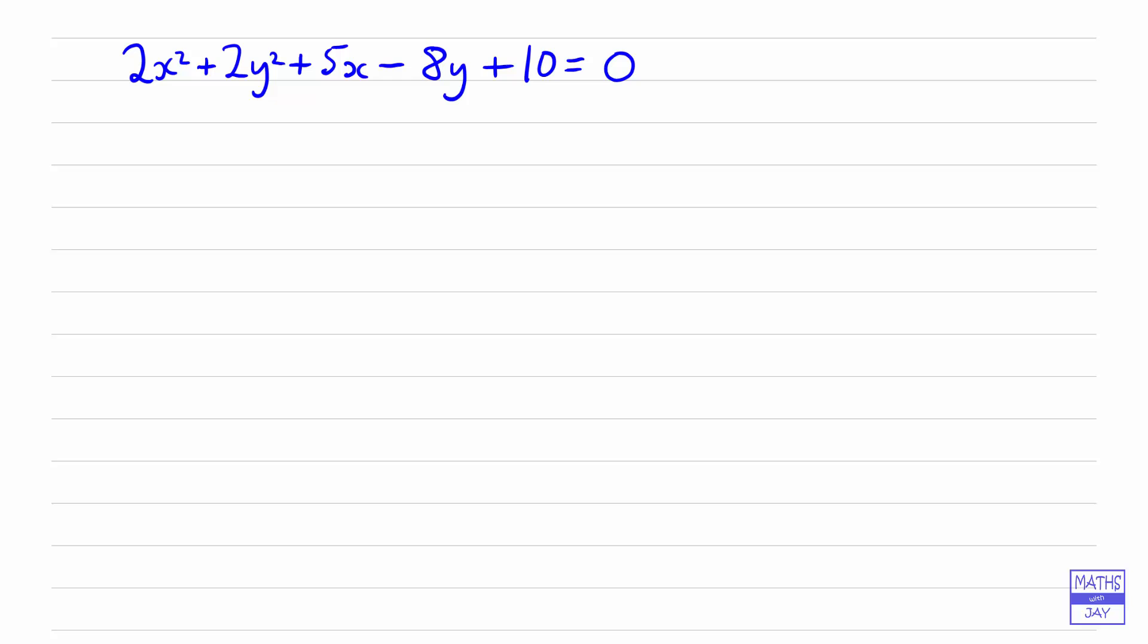So in order to do this we need to write the equation in this form. So once we've done this we'll be able to see that the centre of the circle has got coordinates a, b and that the radius is r.